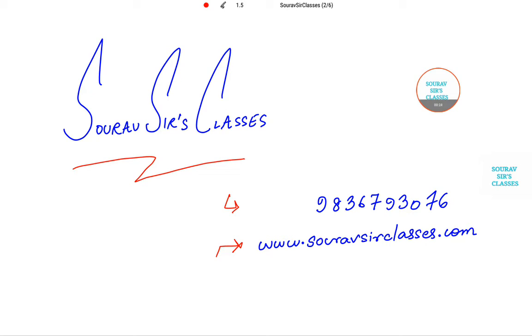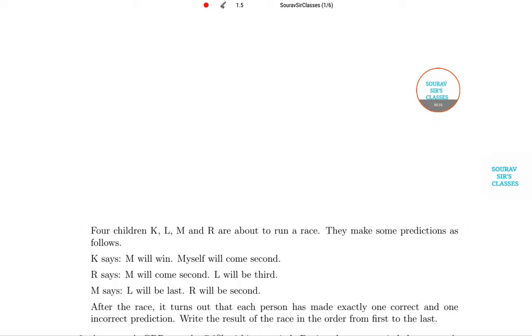In today's tutorial, we will actually undertake an analytical approach, that means we will be solving some sums. So let's get started with the tutorial. Now, the first question is: four children K, L, M, and R are about to run a race. There are four participants and they make some predictions as follows. K says M will win, and myself will come second.